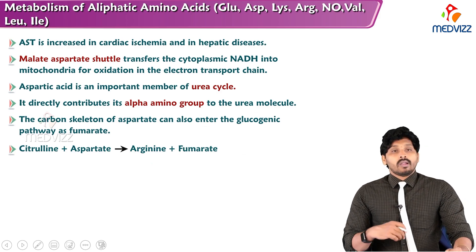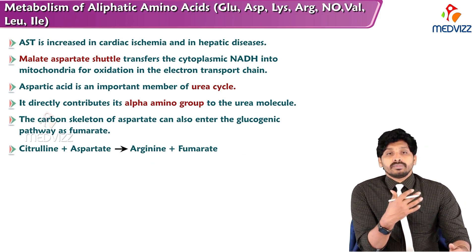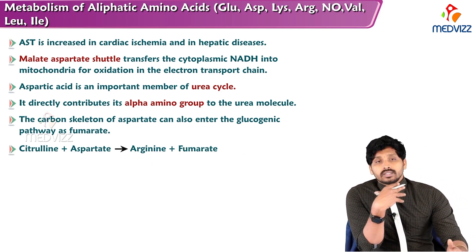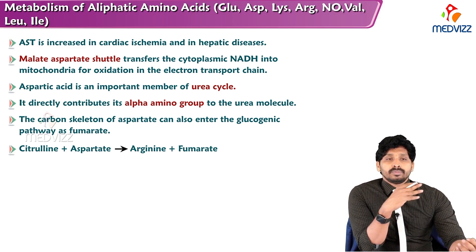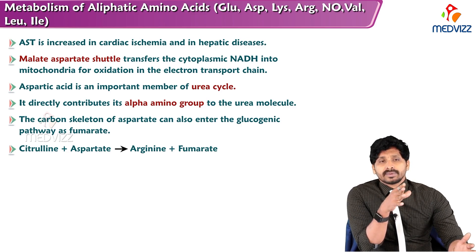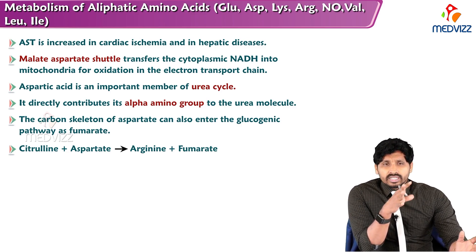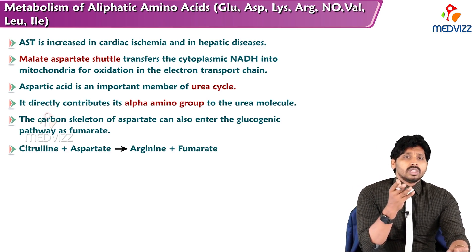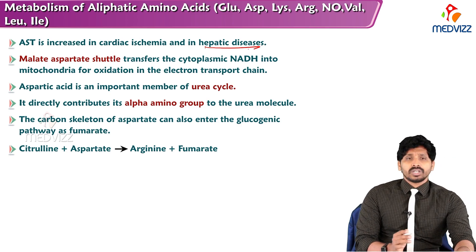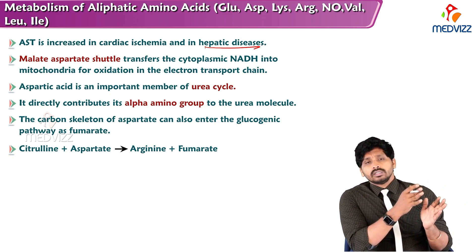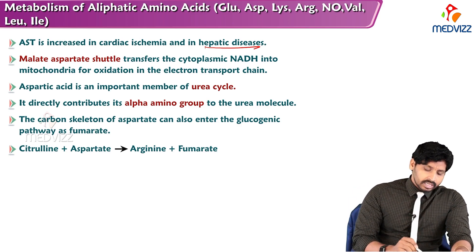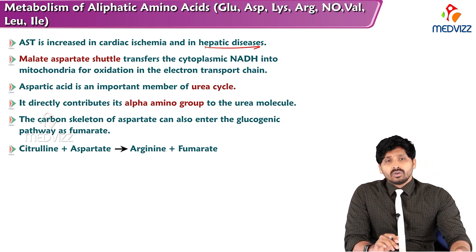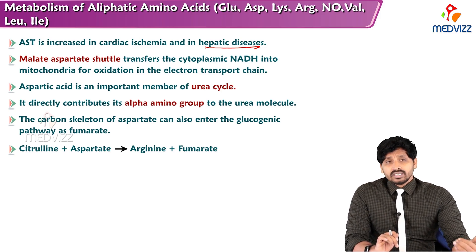In the reaction: aspartate plus alpha-ketoglutarate are converted to oxaloacetate and glutamate by AST. AST is elevated in cardiac ischemia because it is normally high in cardiac tissue; being an intracellular enzyme, damage to cardiac tissue releases AST into circulation. It is also relevant to hepatic disease, as it is present in both cardiac and hepatic tissue. The malate-aspartate shuttle transfers cytoplasmic NADH into mitochondria for oxidation in the electron transport chain.